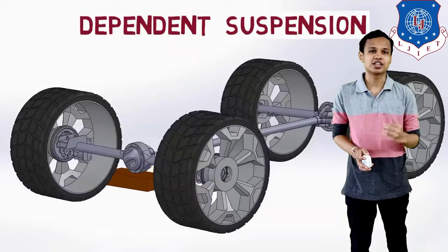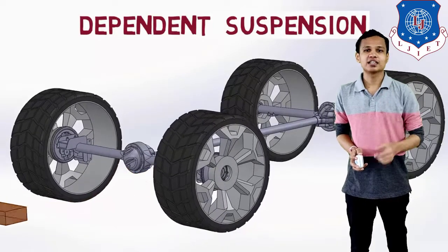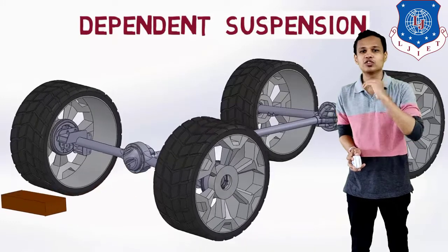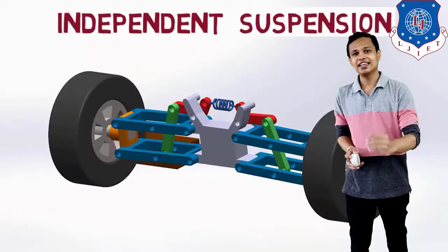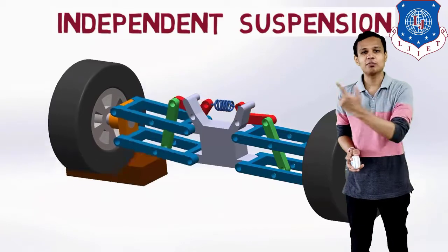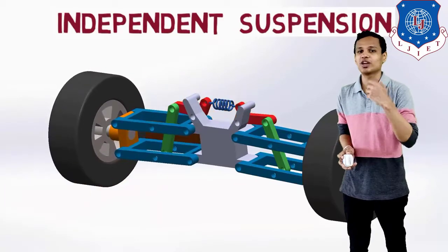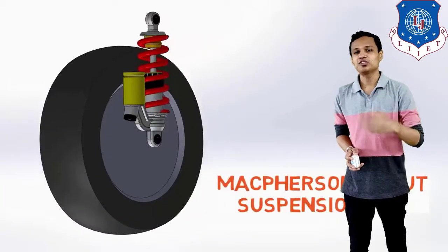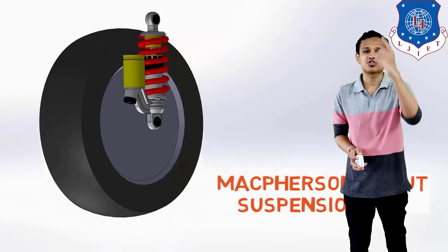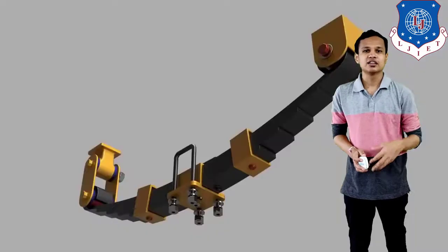The first is the dependent suspension, in which an effect on one tire will also cause an effect on the second one. In the case of independent suspension, the effect on one tire will not be transferred to the second tire. The type of independent suspension is the MacPherson strut, in which only one strut is mounted to the wheel.